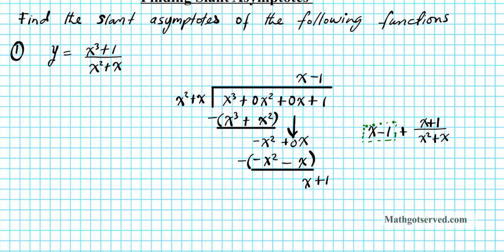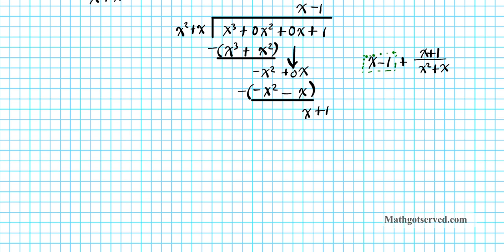Now what is your slant asymptote? It is the resulting polynomial — this linear function right here. This is going to be your slant asymptote. So the slant asymptote is given by y equals x minus 1.